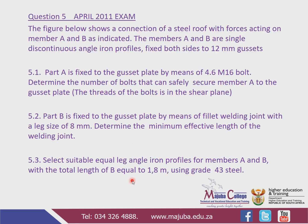So, you remember that we pulled this question from the April 2011 exam, which is question number 5, combining Truss Design as well as Bolt Connection. We have already dealt with 5.1 and 5.2. We are dealing with 5.3 now. The question says: the figure below shows a connection of a steel roof with forces acting on member A and member B as indicated. Members A and B are single discontinuous angle iron profiles, fixed both sides to 12 mm gussets.